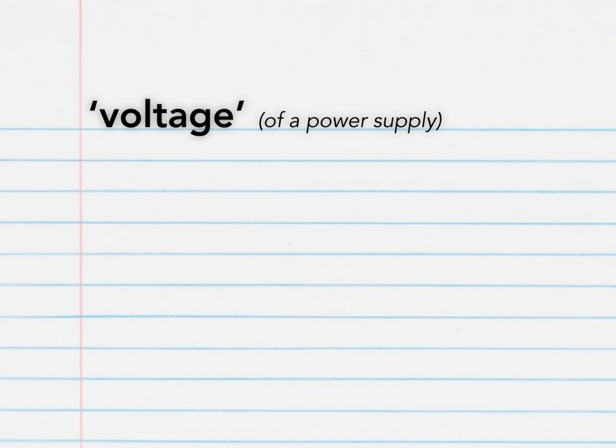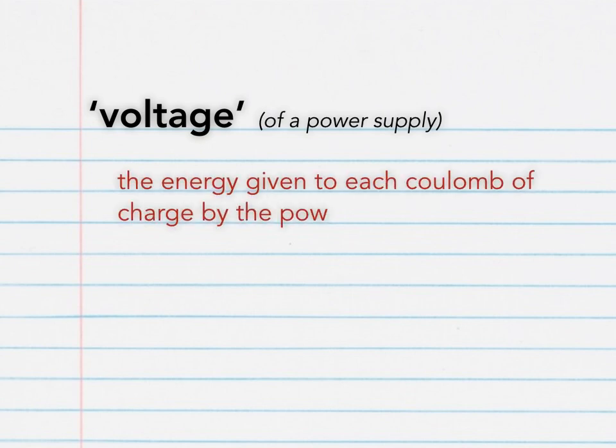The voltage of a power supply, then, is the energy given to each coulomb of charge by the power supply. There is a higher physics equation which helps us with this definition, but we'll stick to national five for now.